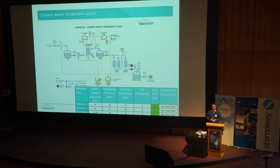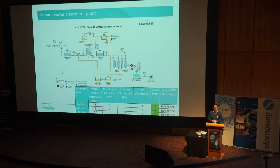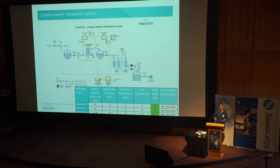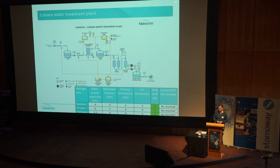So when we designed the treatment process, we took that catchment information into account. In terms of meeting our water quality objectives, we had three processes to remove pathogens: membranes, UV disinfection, and chlorine. You can see we're meeting our water quality objectives, and in some situations looking at a table like this you might think you've over-engineered it — you're getting 11-log bacteria removal. But the reality is treatment processes do what they do — you don't buy a UV system that does one log; they usually do three or four.